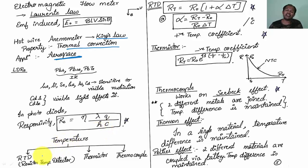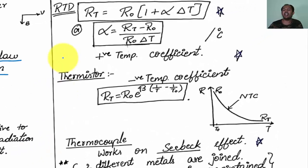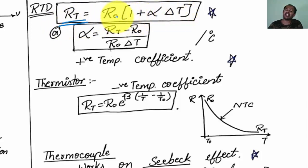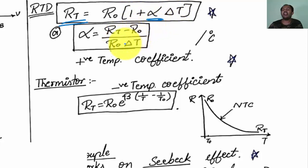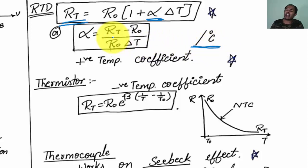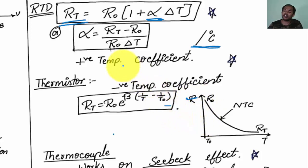Temperature sensors are broadly classified as RTD (resistance temperature detector), thermistor, and thermocouple. A thermistor is a thermally sensitive resistor. For RTD, the resistance is given by RT = R0 × (1 + alpha × delta T), where R0 is the initial resistance, delta T is the change in temperature, and alpha is the temperature coefficient: alpha = (RT - R0) / (R0 × delta T), with unit per degree centigrade. RTD exhibits a positive temperature coefficient, whereas thermistor exhibits a negative temperature coefficient.